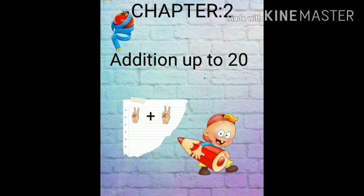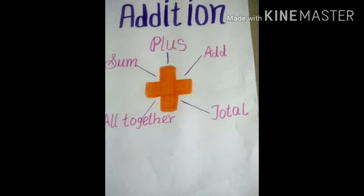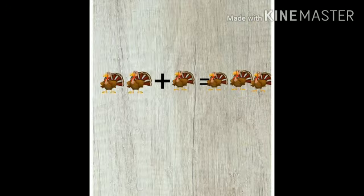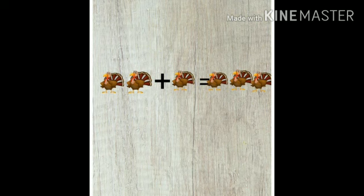The symbol of addition is plus. We call it as sum, add, all together, and total. If we join together, we get some value. If we join these turkeys together, we get the number of turkeys.